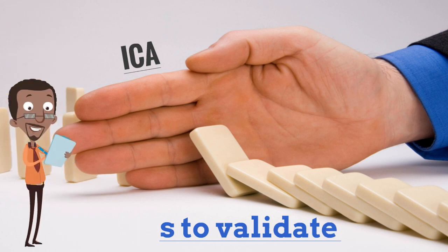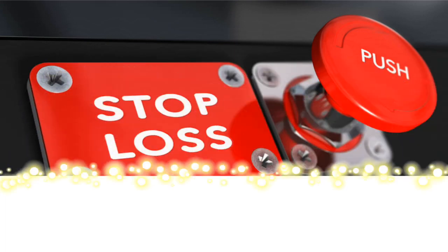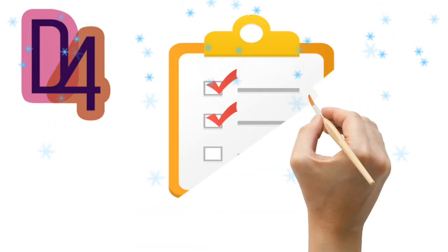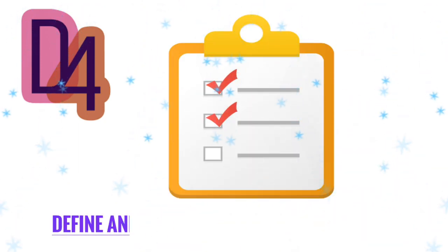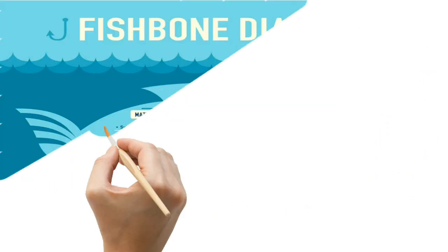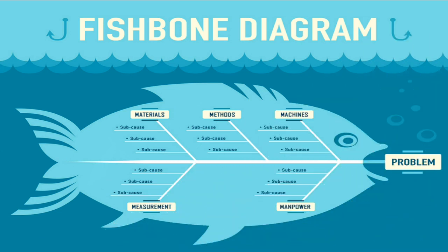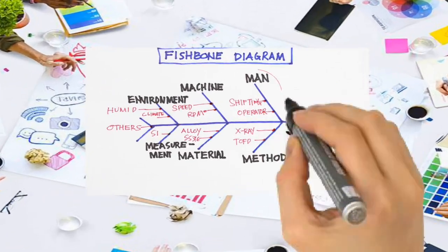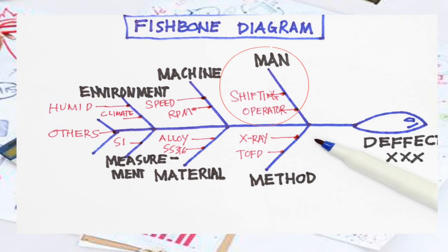The next 8D step is D4 — define and verify root cause and escape point. This is one of the most important stages in the 8D. One needs to prepare a fishbone diagram to list the possible causes. This is done as a team and everyone contributes based on their experience to identify the possible causes.